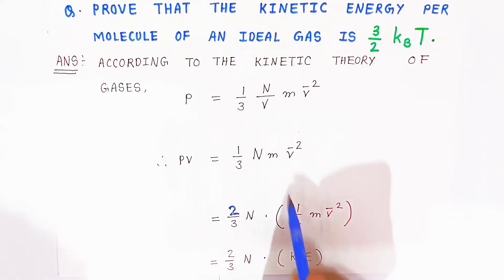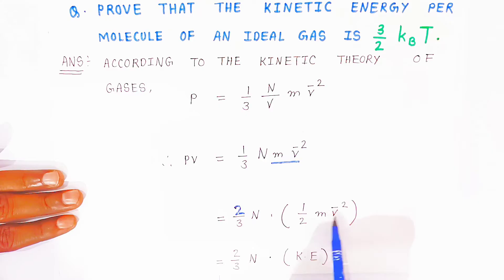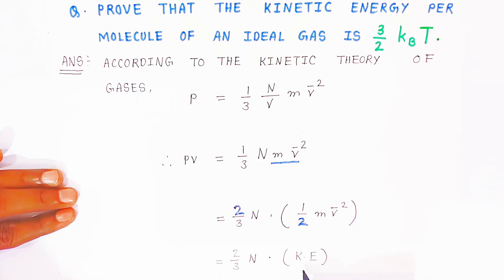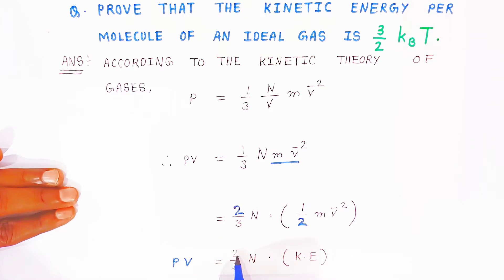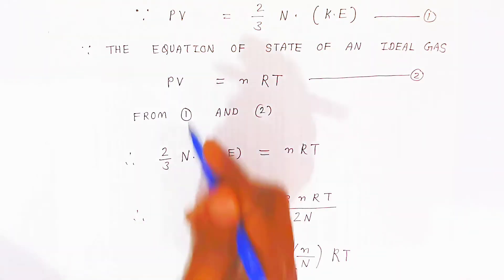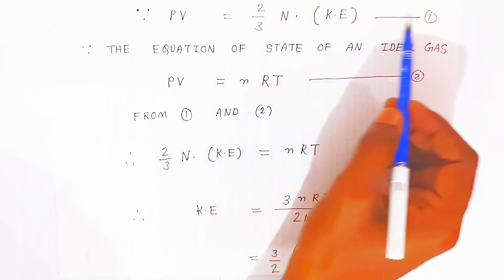We modify this expression so that instead of mv̄², we write (1/2)mv² — and to cancel the (1/2), we put a 2 in front. These two cancel, giving the same expression. Now, (1/2)mv² is nothing but kinetic energy. So we can say: PV = (2/3)·N·(kinetic energy). This is our first expression.